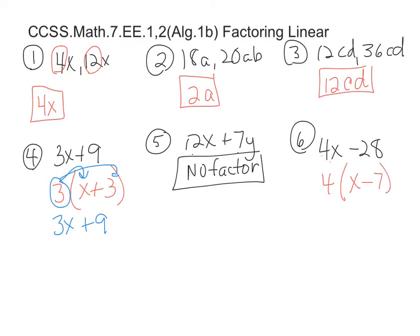And so that's as far as you can go. And to prove that, you can go 4 times x is 4x. And 4 times negative 7 is negative 28. Sure enough, you get the same answer. Thank you.